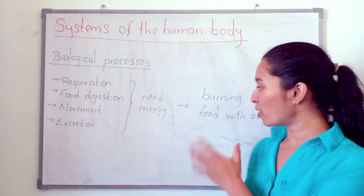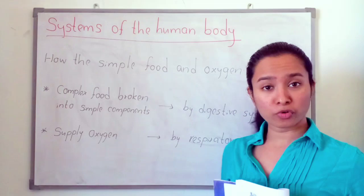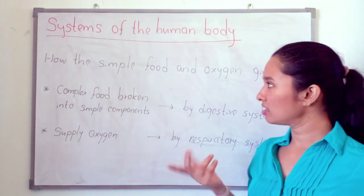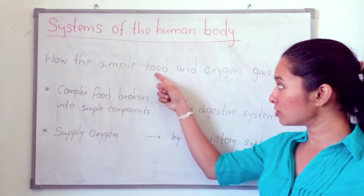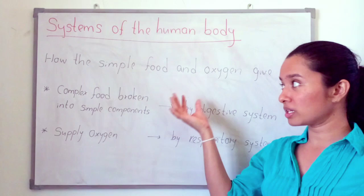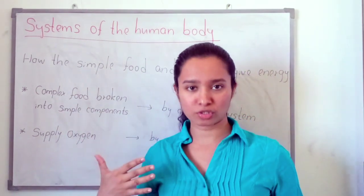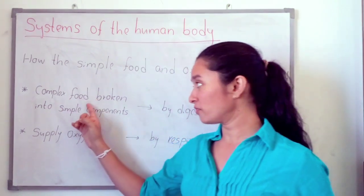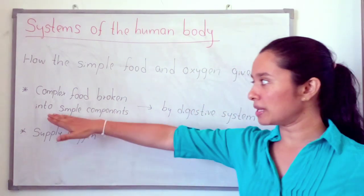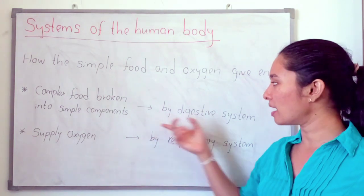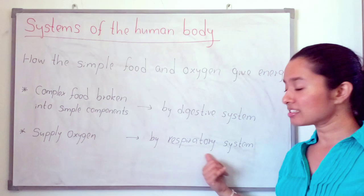So, we are going to discuss about these reactions. How do simple food and oxygen give energy to us to do activities? Simple food and oxygen combine together and give energy. In day-to-day life, we take complex food. These complex foods are broken into simple components by the digestive system.